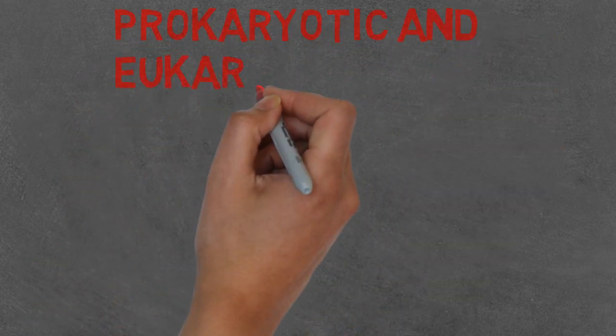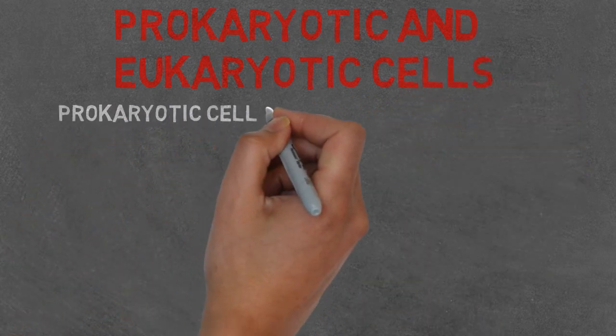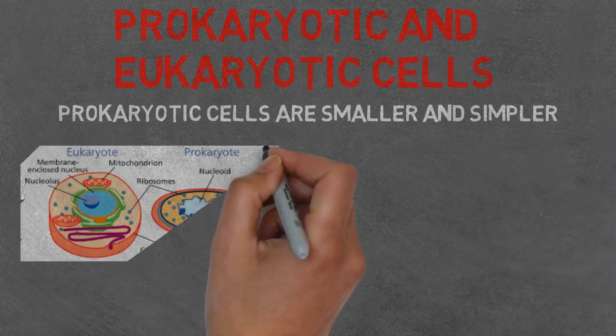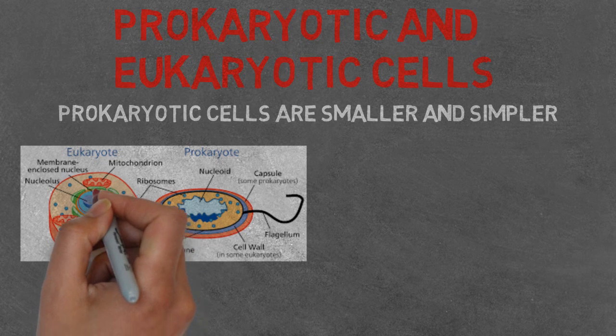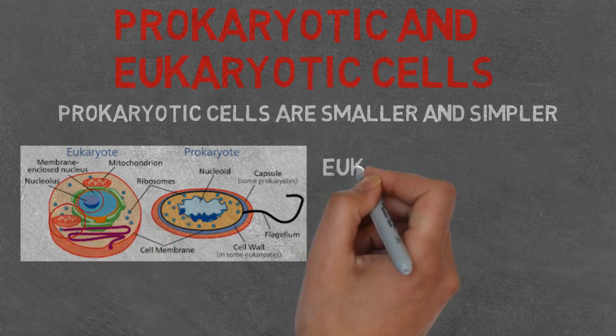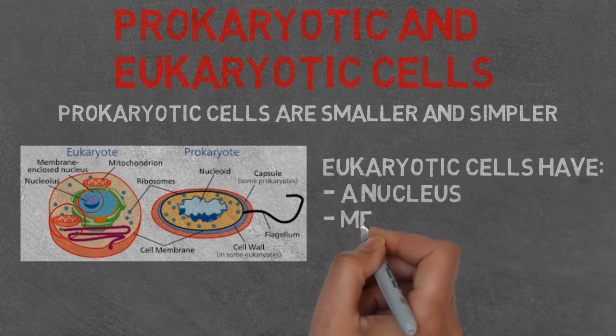The two types of cells are prokaryotic and eukaryotic. Prokaryotic cells are smaller and simpler in structure than eukaryotic. However, eukaryotic cells have a nucleus, which is where the DNA material is stored, and membrane-bound organelles, such as mitochondria.